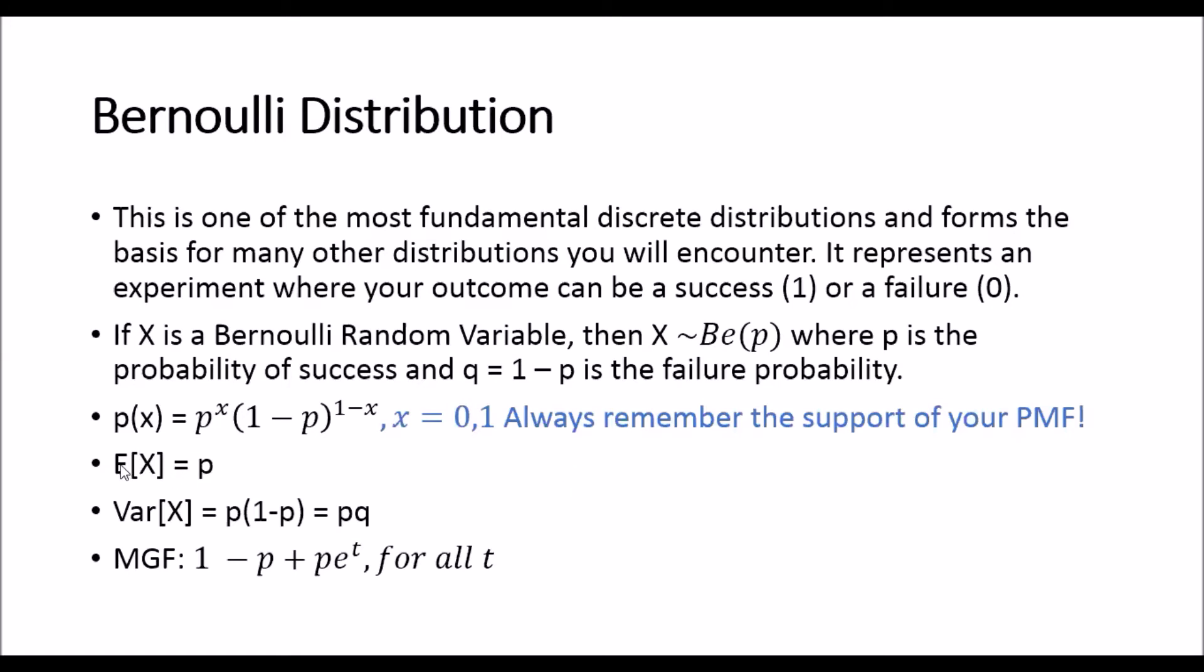So for a Bernoulli distribution, Bernoulli distributed random variable X, its expected value is equal to p, the success probability. Its variance is equal to p times q. And its moment generating function is 1 minus p plus p*e^t for all values of t. So these are the basic characteristics of a Bernoulli distributed random variable.